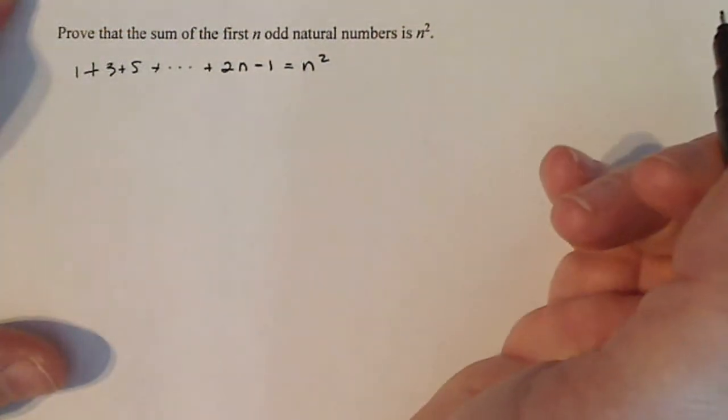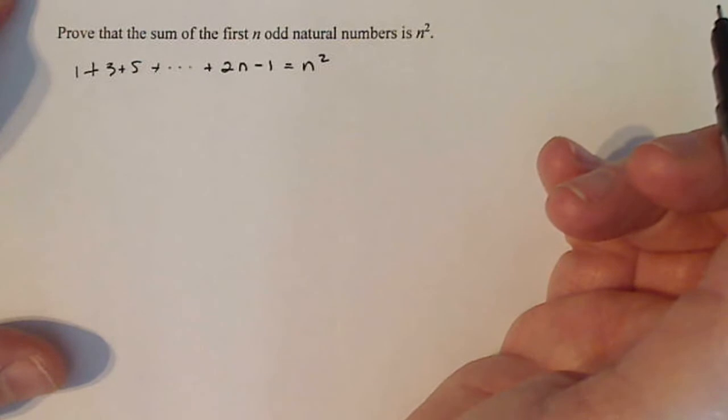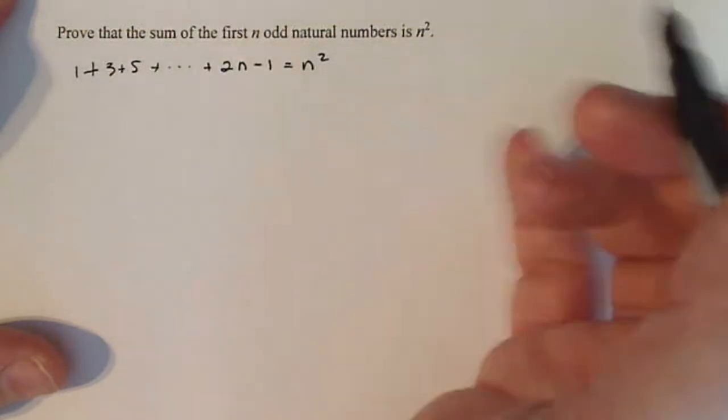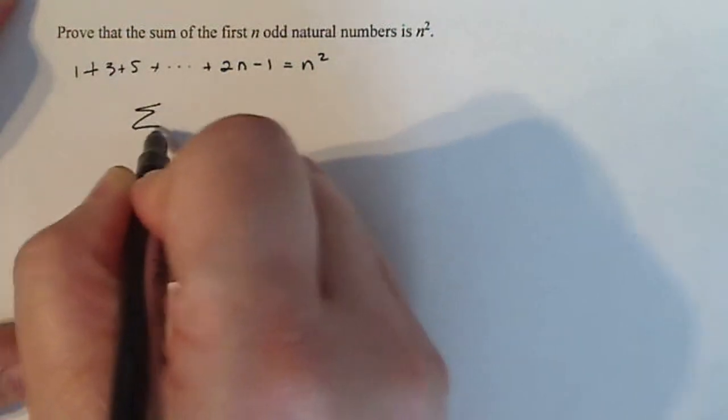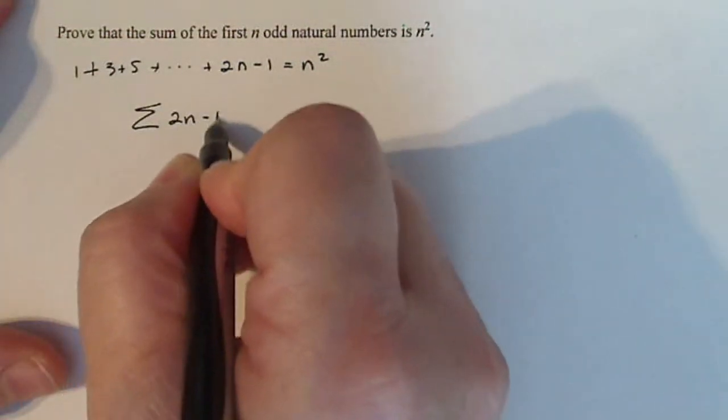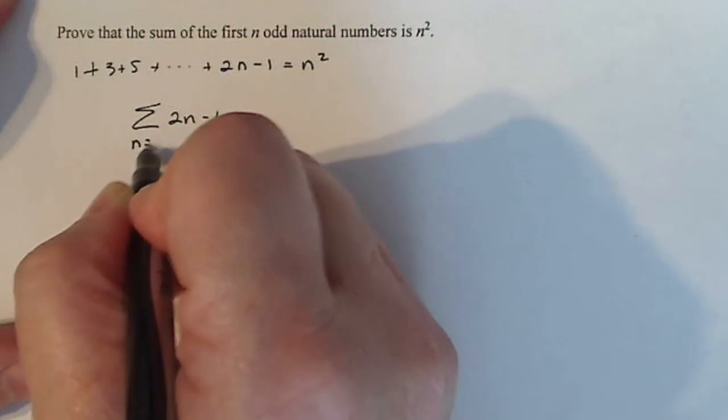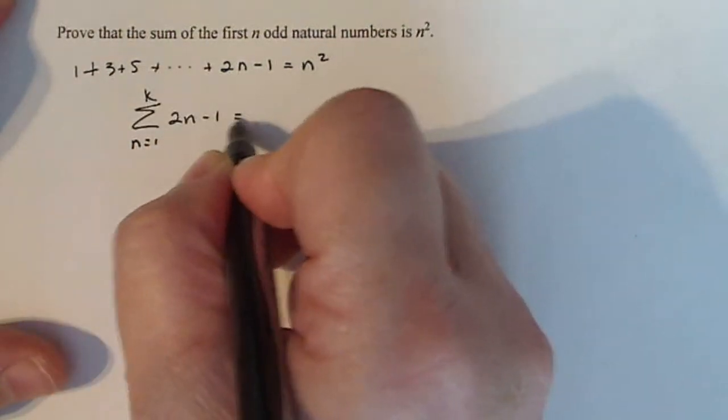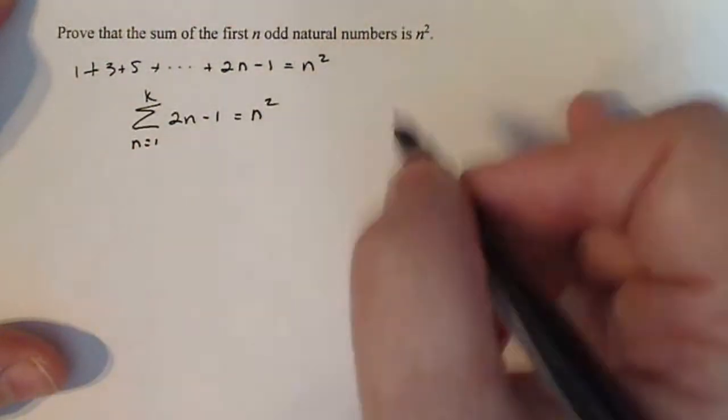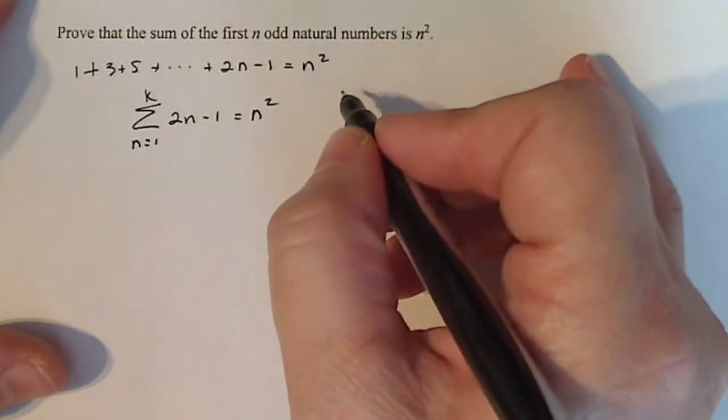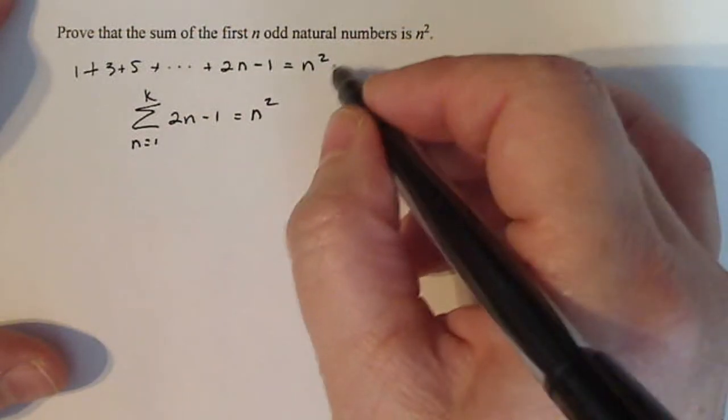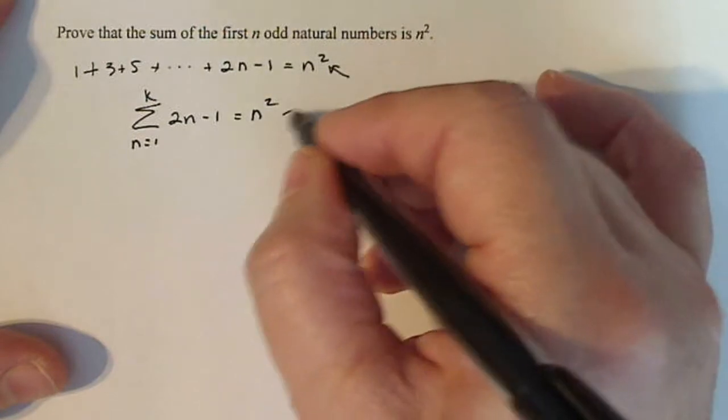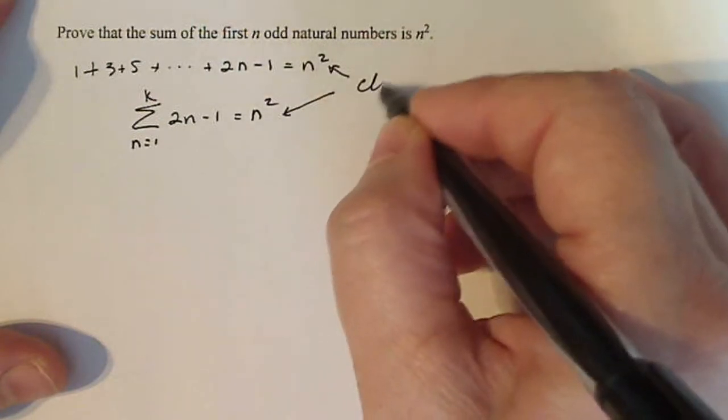Now, for those of you who had calc two, calc two isn't a prerequisite to our discrete math. But in calc two, you can think of this as the sum of (2n - 1) for n equal 1 to k. And they're saying that the closed form of that is n squared. So basically, we're talking about closed forms here.